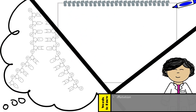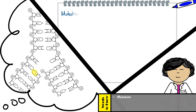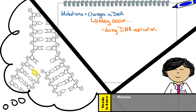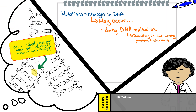Let's first start by looking at what a mutation is. A mutation is caused due to changes to the DNA, which may occur during DNA replication, resulting in incorrect protein instructions, thus possibly affecting the cell's function.